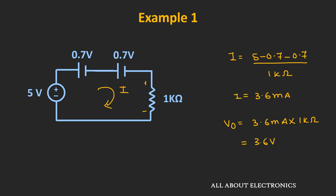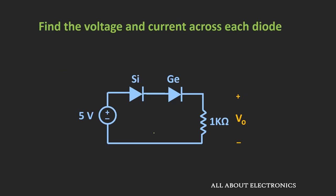So in case of series-connected diodes, the threshold voltage to turn on the combination increases. Instead of two silicon diodes, if we have three silicon diodes in series, the threshold voltage increases to 2.1V. Similarly, now try to find the current and output voltage in the given circuit, which is similar to the previous one but with one silicon diode replaced by a germanium diode. Try to find the answer and share it in the comment section.